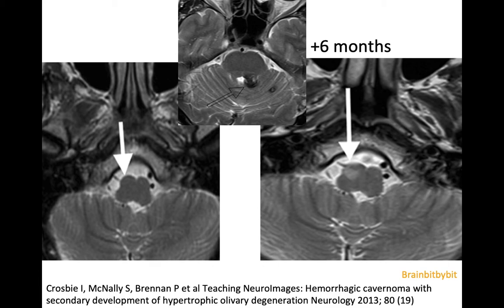The hypertrophy does not become apparent straight away — it takes time to develop, as illustrated in this 2013 Neurology case of a patient with multiple cavernomas, one in the superior cerebellar peduncle that had hemorrhaged. On the initial MRI the right inferior olivary nucleus looked normal, but after six months the patient developed hypertrophic olivary degeneration, with clinically a palatal tremor. Thanks for watching — until next time, when we will look at a disease entity involving glutamate.